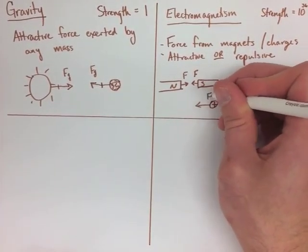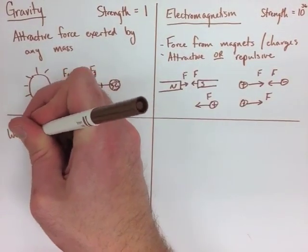But if we have two positive ions, they're going to repel each other. All of these are electromagnetic forces.